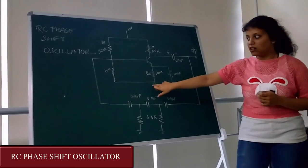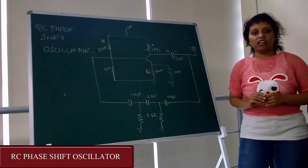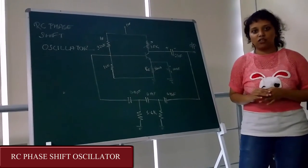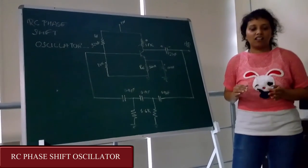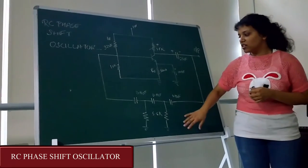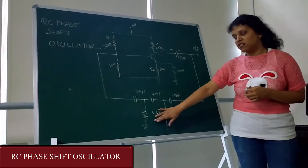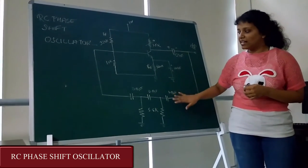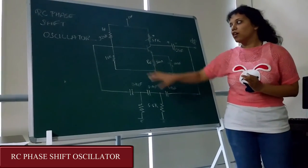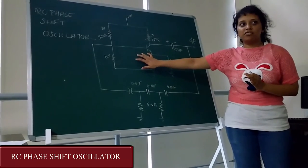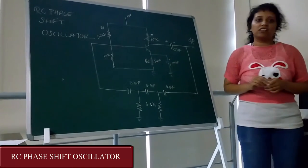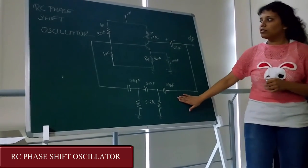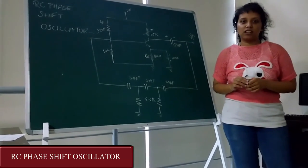Moreover this is an oscillator. So we don't have to give any input from a function generator or something and still we get a sine wave. Here this combination of capacitors and resistors acts like a feedback input to the base. As a result of which we get a sine wave at the output. This is all about the circuit diagram of phase shift oscillator.